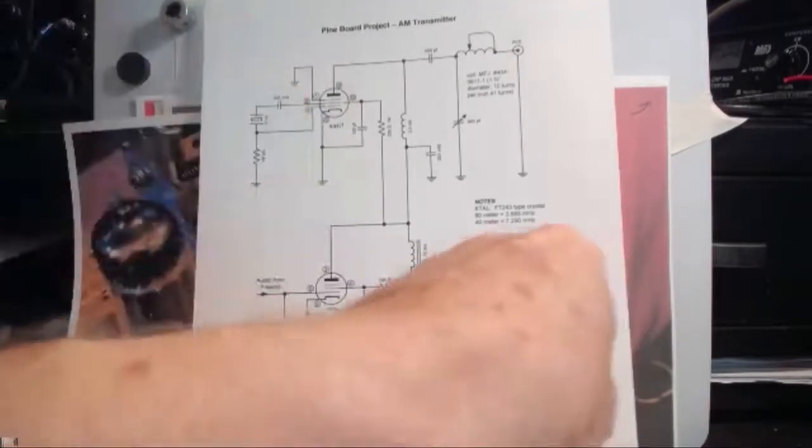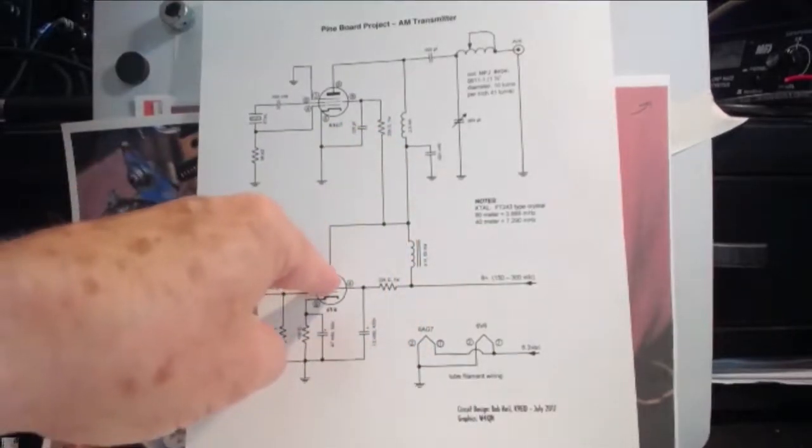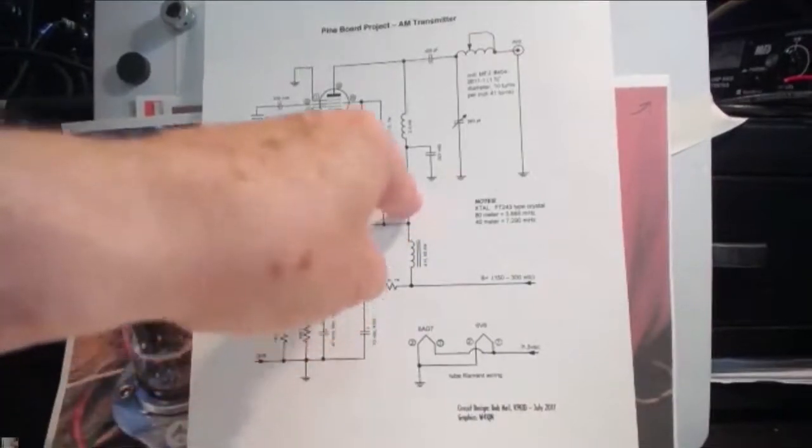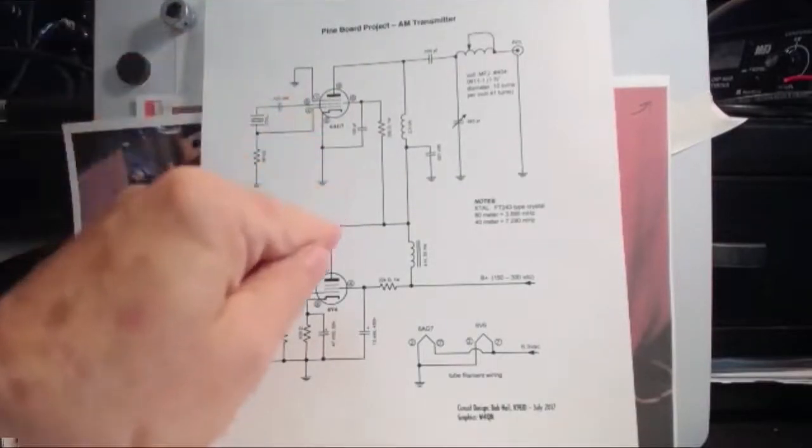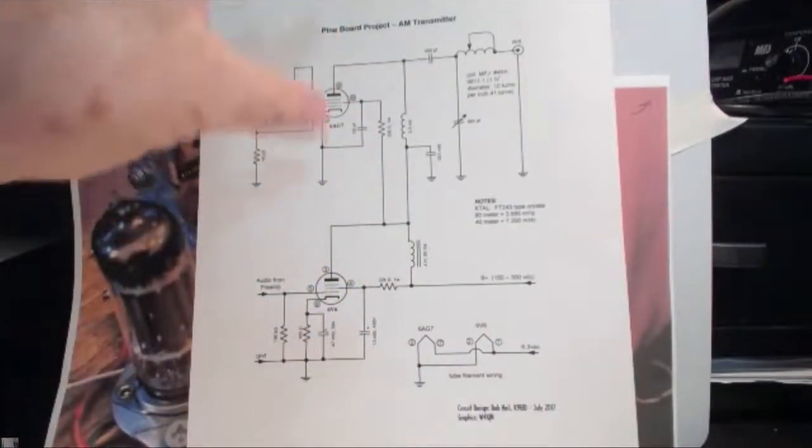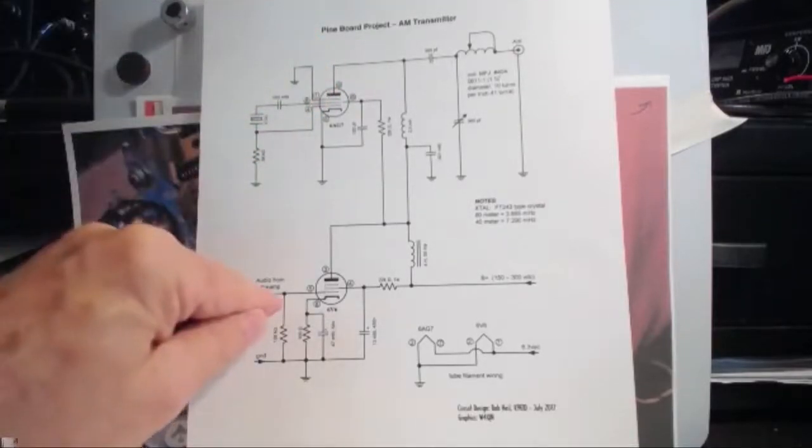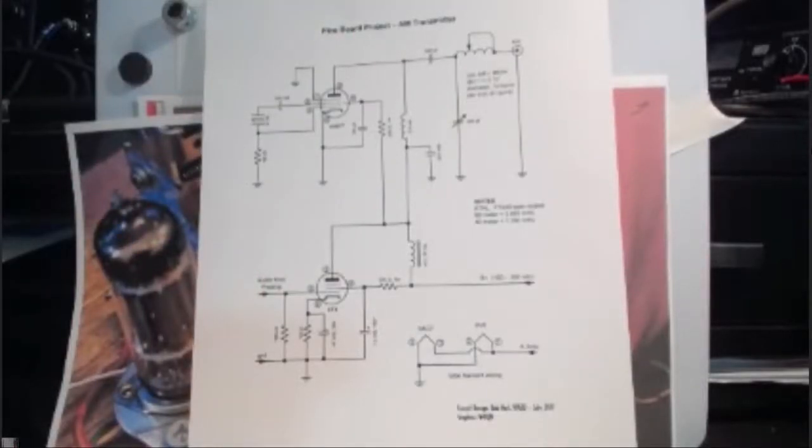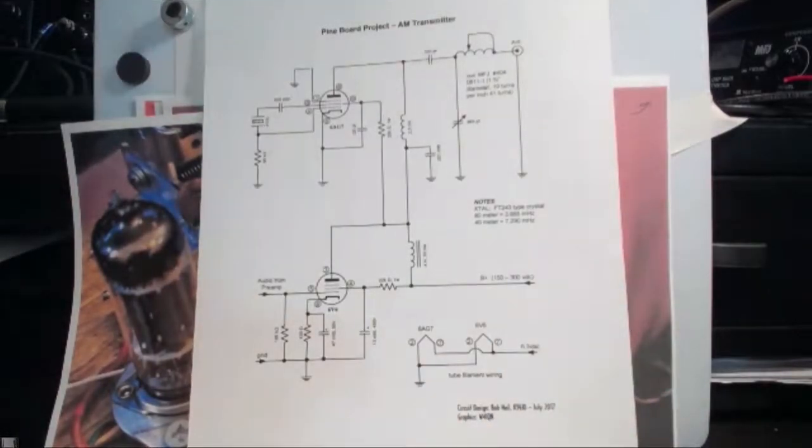You see the B plus is coming in here. It goes up and powers the plate of the 6V6. It also gives the power to the final amplifier, but this modulator goes up and modulates that screen. It causes the electrons to be amplified at the audio frequency. It's a very cool, simple way to get AM without a lot of big transformers. We're quite a bit ahead of ourself on this, but I want to show you the whole thing.